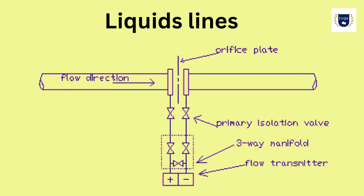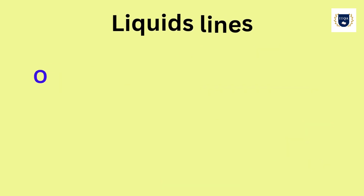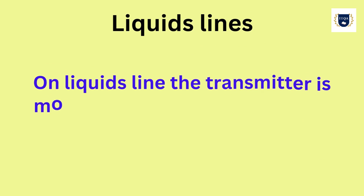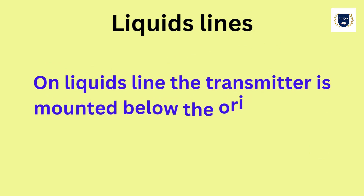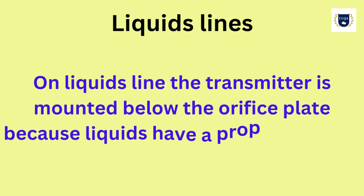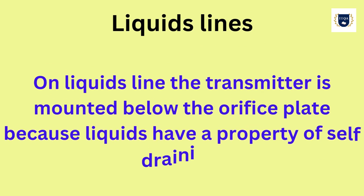Liquid Lines. On liquids line, the transmitter is mounted below the orifice plate because liquids have a property of self-draining.